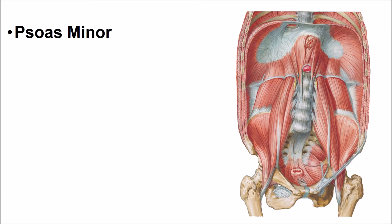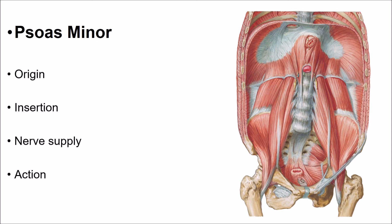The psoas minor muscle is a small muscle which lies in front of the psoas major muscle. Mostly, it is absent. The psoas minor muscle arises from the bodies of T12 and L1 vertebrae. It forms a long flat tendon which inserts onto the pecten pubis or iliopubic eminence. This muscle is supplied by the L1 spinal nerve.